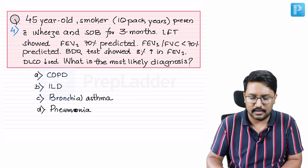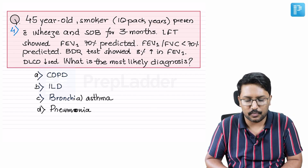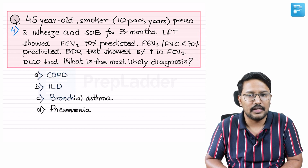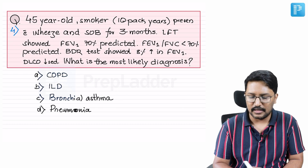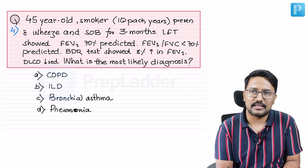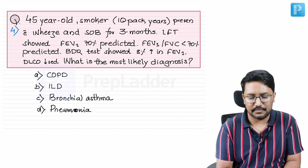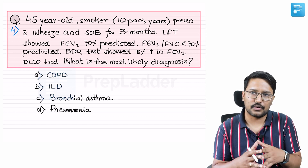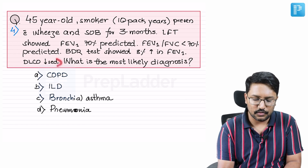We have a 45-year-old smoker with a history of 10 pack years. He presents with cough and shortness of breath for three months — a chronic case. LFT showed FEV1 of 70%, so forced expiratory volume is reduced to some extent. FEV1/FVC is less than 70%, or less than 0.7 of predicted. The BDR (bronchodilator reversibility) test showed an 8% increase in FEV1 after a short-acting beta agonist was administered. This patient's DLCO is also reduced.